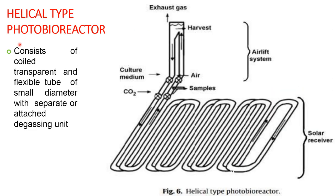Helical type photobioreactor: it consists of a coiled transparent flexible tube of small diameter with a separate or attached degassing unit. This coiled transparent flexible tube is also called the solar receiver, and the degassing unit is called the airlift system. The microalgal culture can be grown in this helical tube.